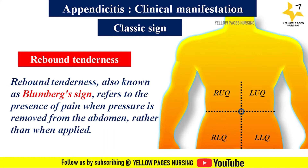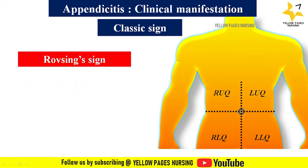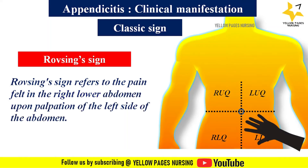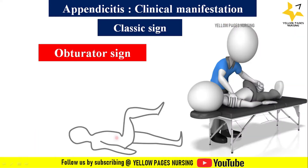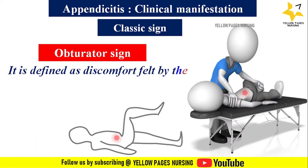Rovsing's sign refers to pain felt in the right lower abdomen upon palpation of the left side of the abdomen; a positive Rovsing's sign is an indication of acute appendicitis characterized by inflammation, infection, or swelling of the appendix. The obturator sign is defined as discomfort felt by the patient on slow internal rotation of the hip joint while the right knee is flexed.